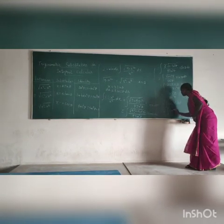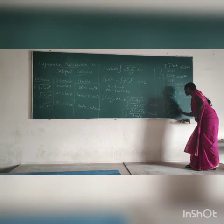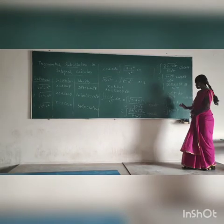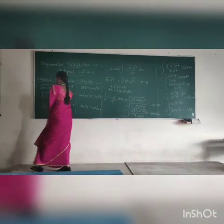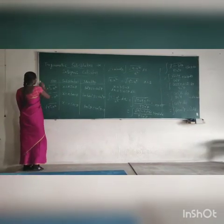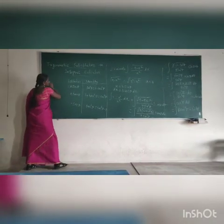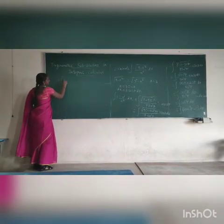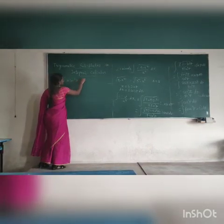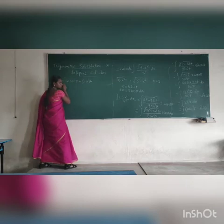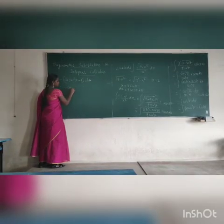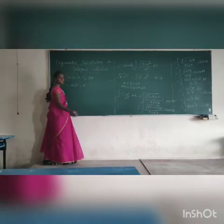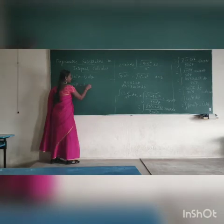Cot squared theta can be written as cosec squared theta minus 1, d theta. So we apply the formula to find the integration of cot squared theta. The integration of cosec squared theta is minus cot theta, and the integration of minus 1 is minus theta. So the result is minus cot theta minus theta, plus the constant c.